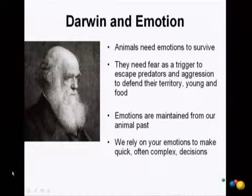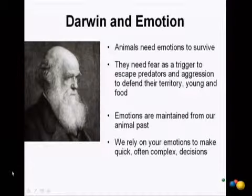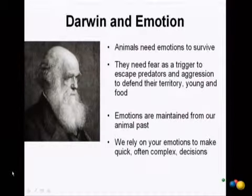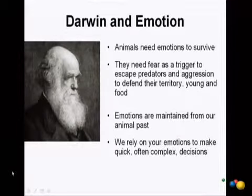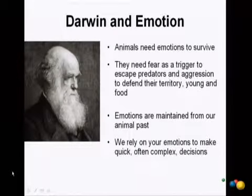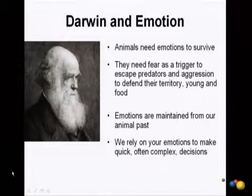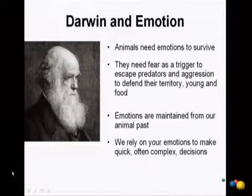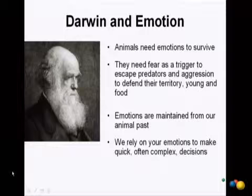Darwin, speaking about emotions, made it very clear that animals need emotions to survive — and so do we. They need fear as a trigger to escape predators, and aggression to defend their territory, their young, and food. He believed that emotions are really maintained from our animal past in the trajectory of evolution of human animals, and that we really rely on different emotions in different ways to make quick, often complex decisions.